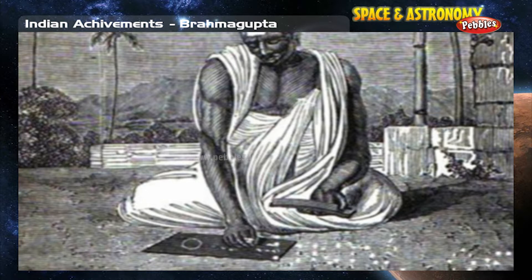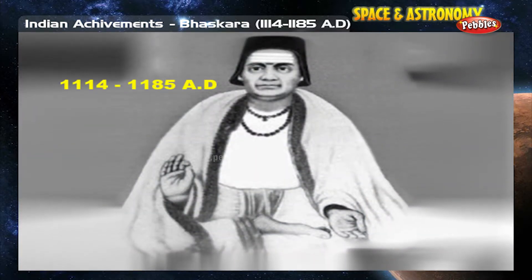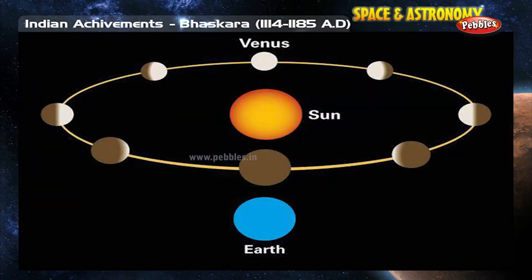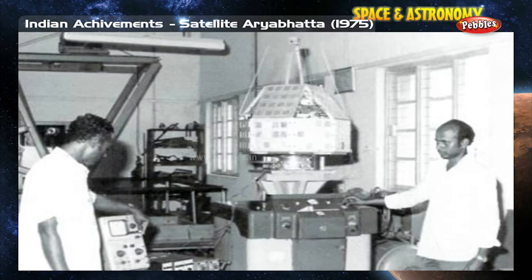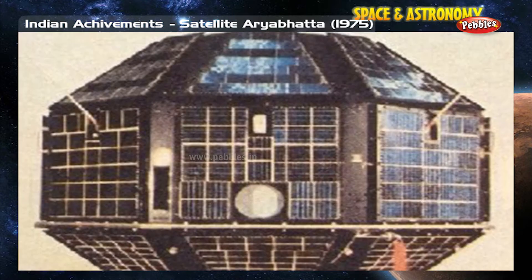Bhaskara was the head of the Astronomical Observatory at Ujjain, continuing the mathematical tradition of Brahmagupta. He wrote the Siddhanta Shiromani, which consists of two parts: Goladhyaya, meaning Sphere, and Graha Ganita, meaning Mathematics of the Planets.